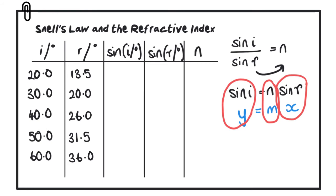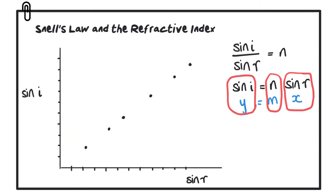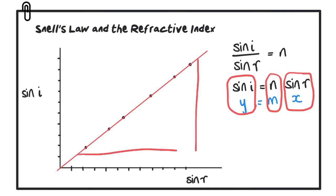You can pause the video to plot the graph. Your graph should look similar to the one shown, and the next step is to draw a line of best fit. The fact that sine i against sine r gives a straight line verifies Snell's law. To find the refractive index, draw a large triangle on the line of best fit and calculate the gradient — choosing two points on the line, not necessarily actual data points. The refractive index of this material should work out to be around 1.5.